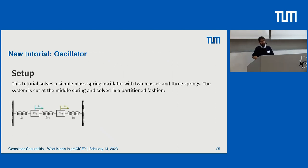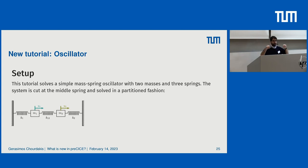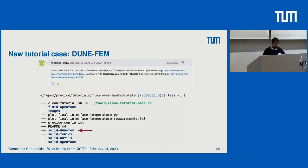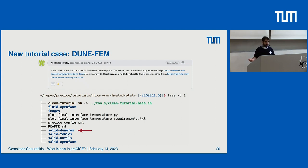Another tutorial seen in papers — mostly by Benjamin Roddenberg — is the partitioned oscillator example: two masses connected with springs. This is very helpful for studying different time integration schemes. There were also a few new tutorial cases, and one I'd like to mention — since the contributor is here — is a DUNE-FEM case for flow over a heated plate. For those who may have heard something similar for the perpendicular flap, this is for DUNE-FEM, not the general DUNE solver — the naming is a bit confusing.